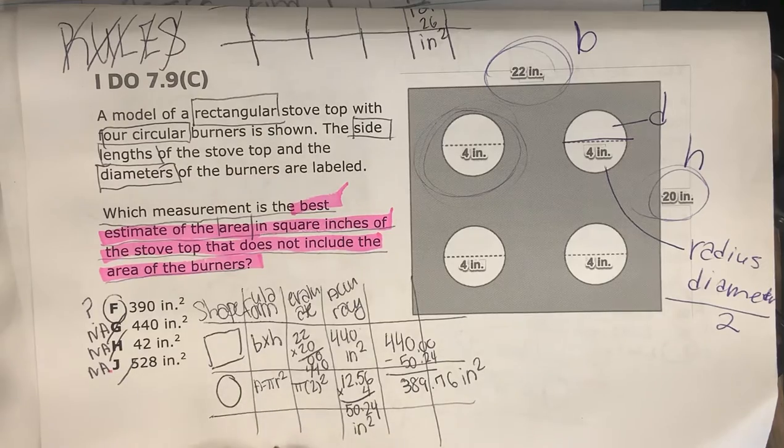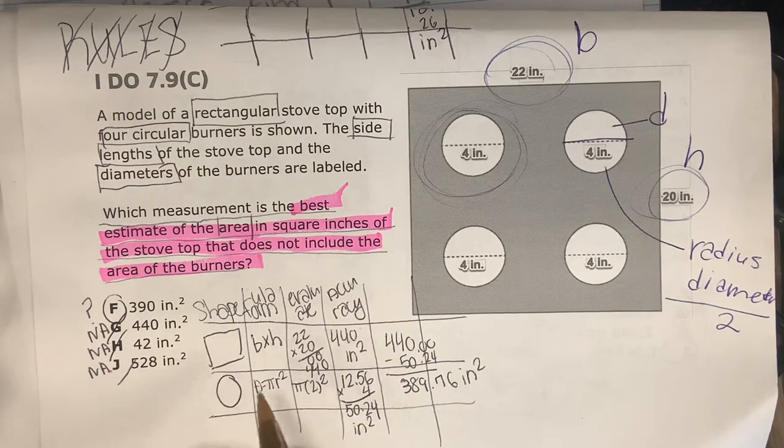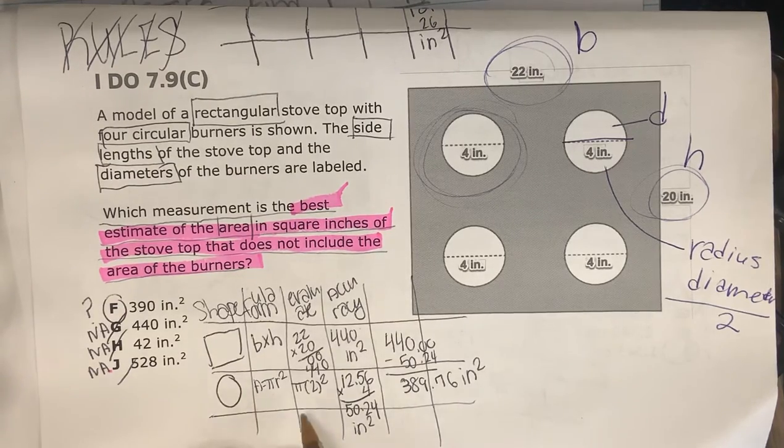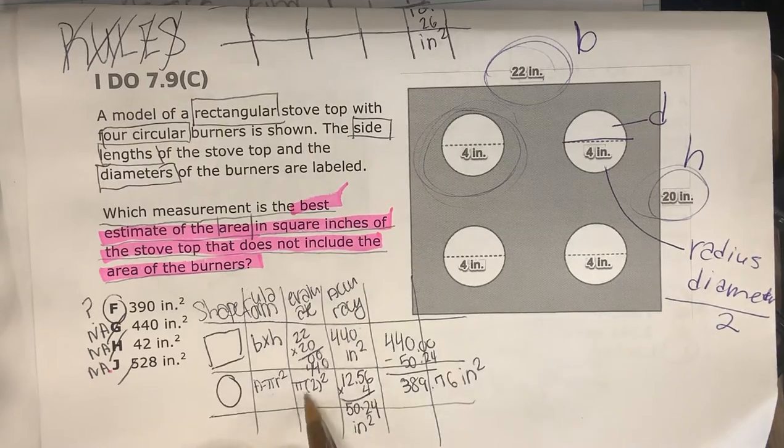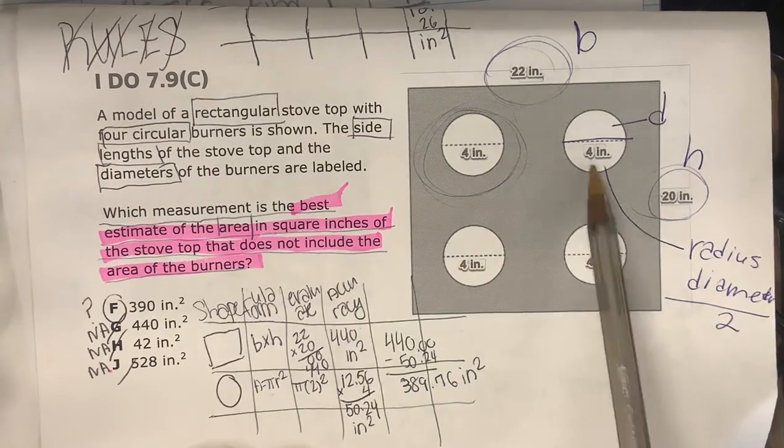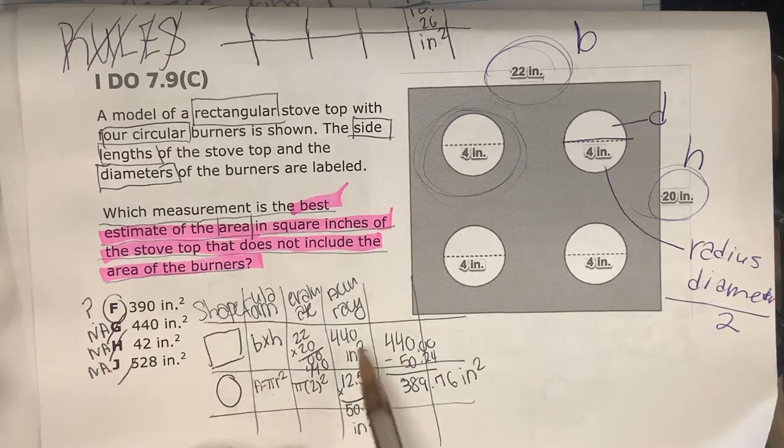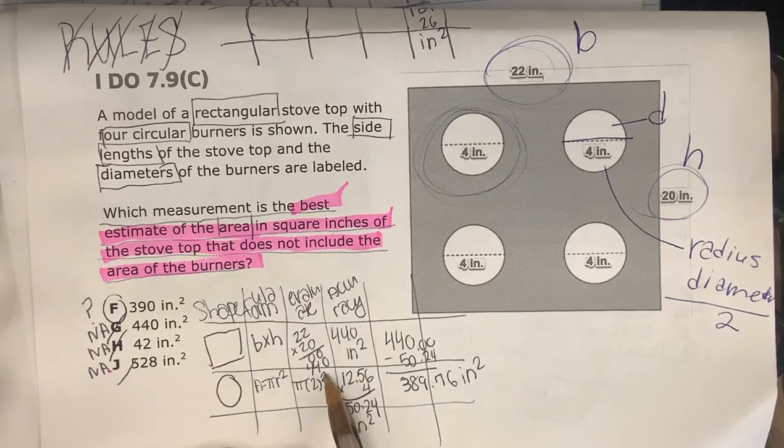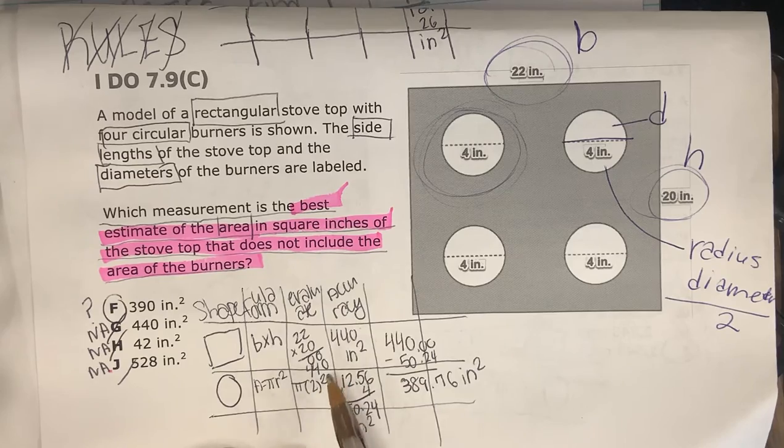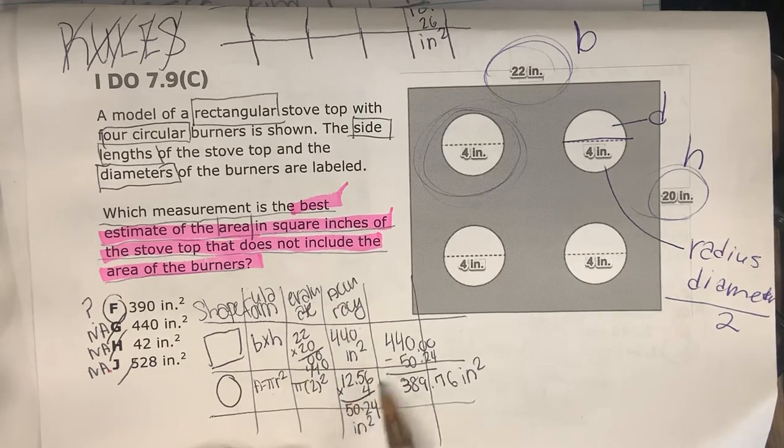And then we have to find the area of the circle. The area of the circle is pi r squared. The radius is going to be 2, because remember, the radius is half the diameter. So 4 divided by 2 is 2, 2 squared. So 2 squared is 4, and I know that 4 multiplied by pi is 12.56.